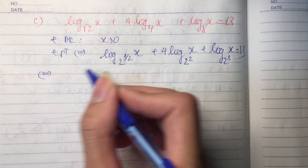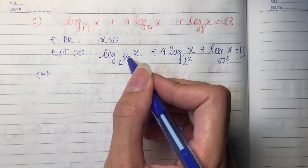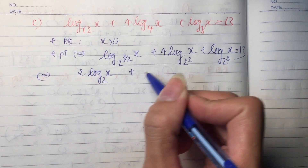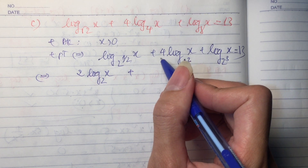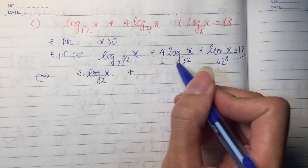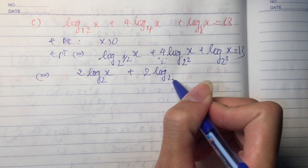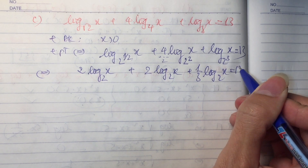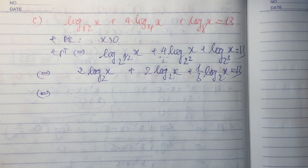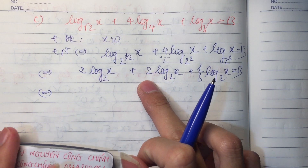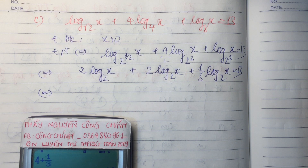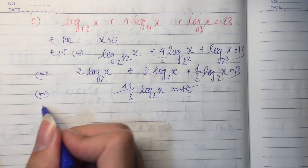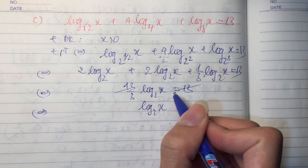Theo tính chất: nếu dưới cơ số mà có mũ thì ra ngoài là lấy nghịch đảo. Chỗ này đang mũ 1 phần 2, ra ngoài lấy nghịch đảo thành 2 phần 1, nhân với log cơ số 2 của x. Cái 4 lần log cơ số 4: 4 ra ngoài nghịch đảo là 1 phần 2, nên ra ngoài thành 4 chia 2 bằng 2 lần log cơ số 2 của x. Cái 8 ra ngoài là 1 phần 3, nhân log cơ số 2 của x. Gom tất cả lại: 2 cộng 2 là 4, cộng 1 phần 3 thành 13 phần 3. Vậy 13 phần 3 nhân log cơ số 2 của x bằng 13. Hai bên chia cho 13 phần 3 thì log cơ số 2 của x bằng 3.